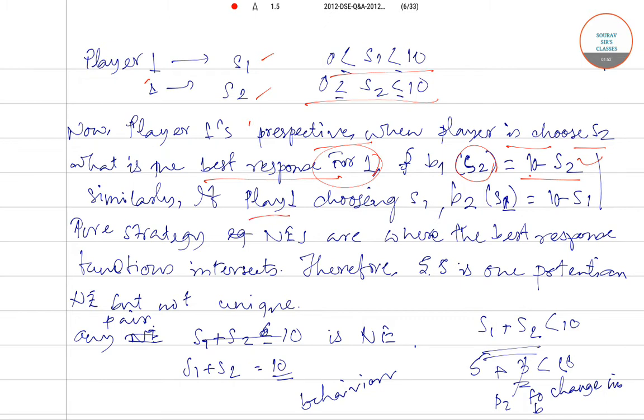Again, for player 1, if player 1 is choosing S1, then from player 2's perspective, the best response for player 2 is to choose B2(S1). That is, the best response function for player 2 when player 1 is choosing S1 is 10 minus S1.